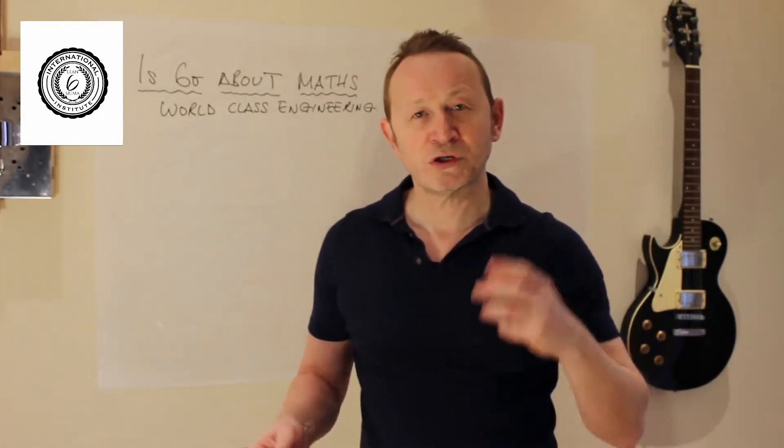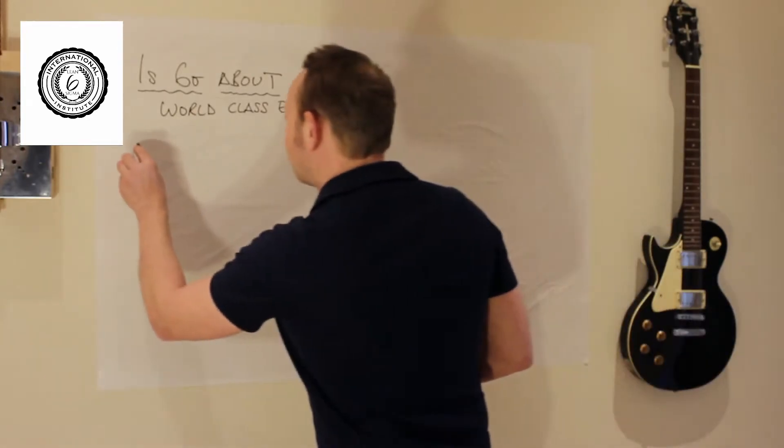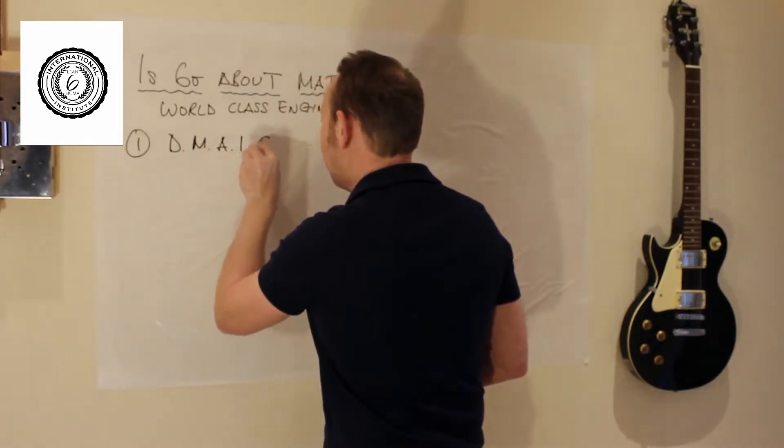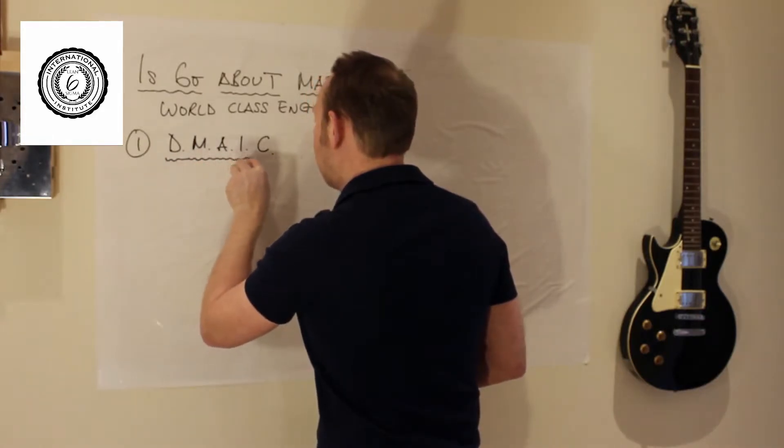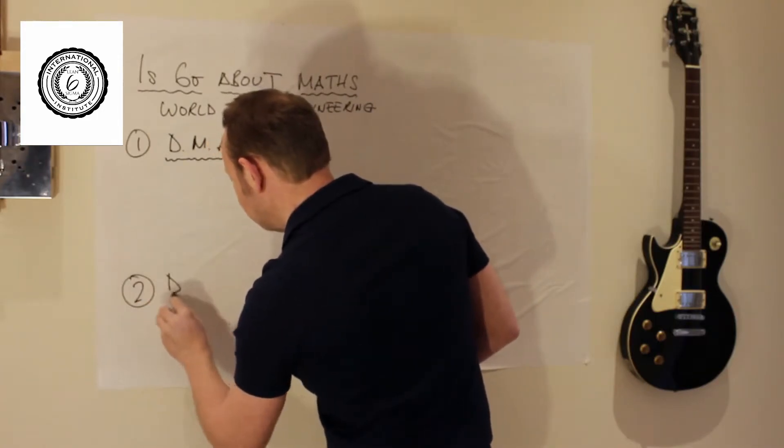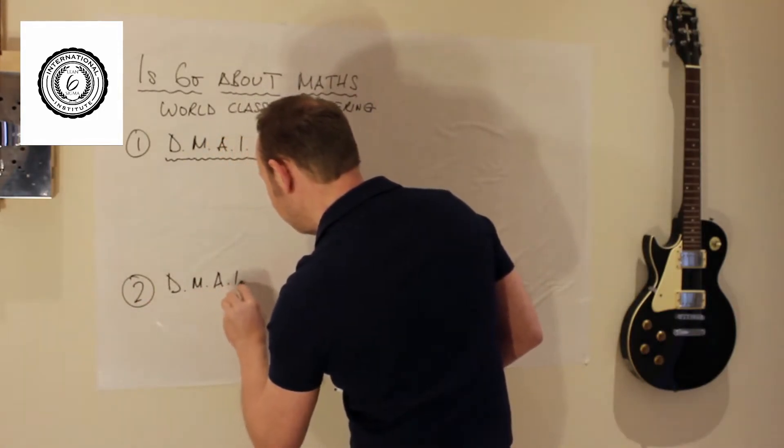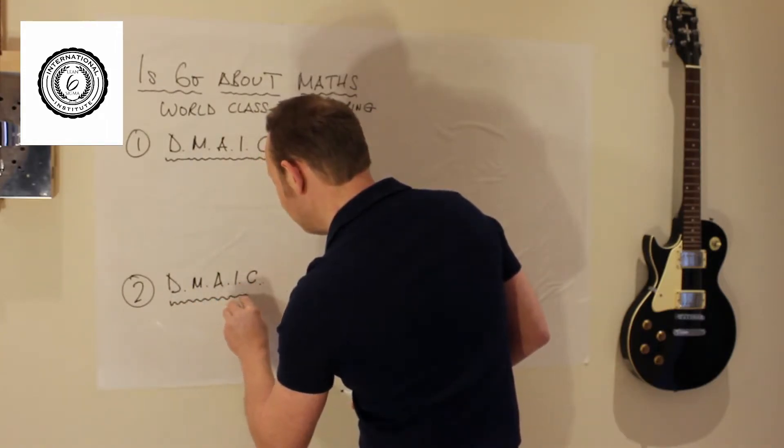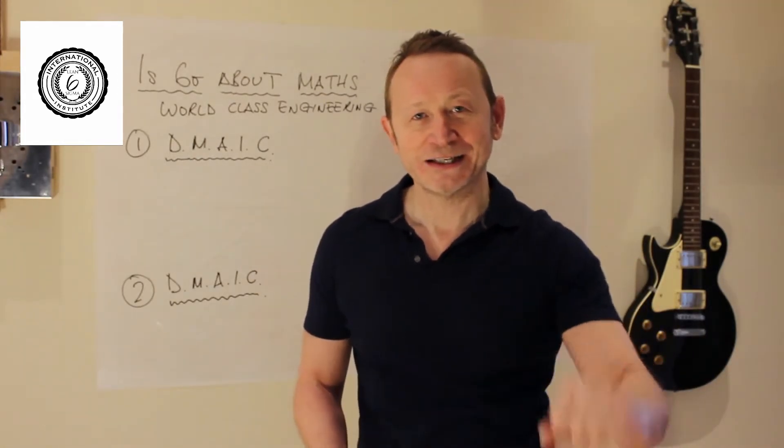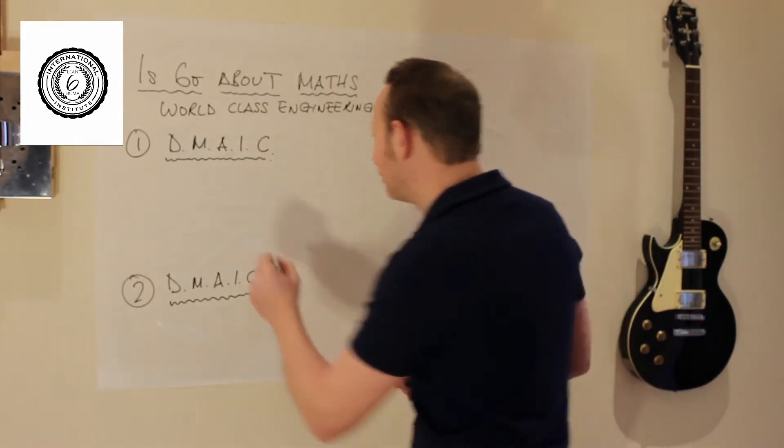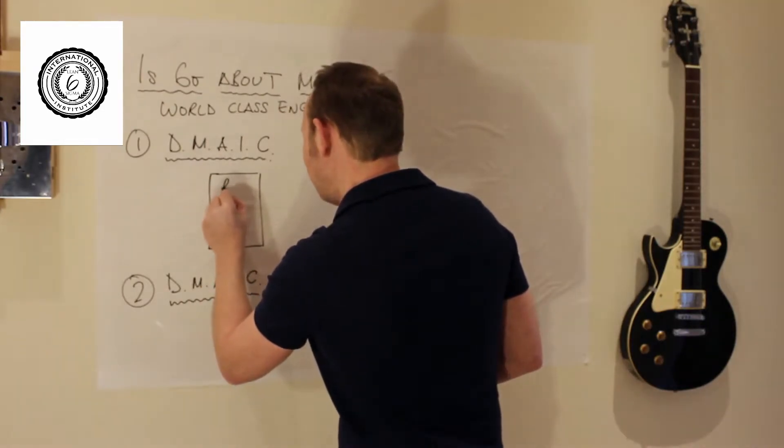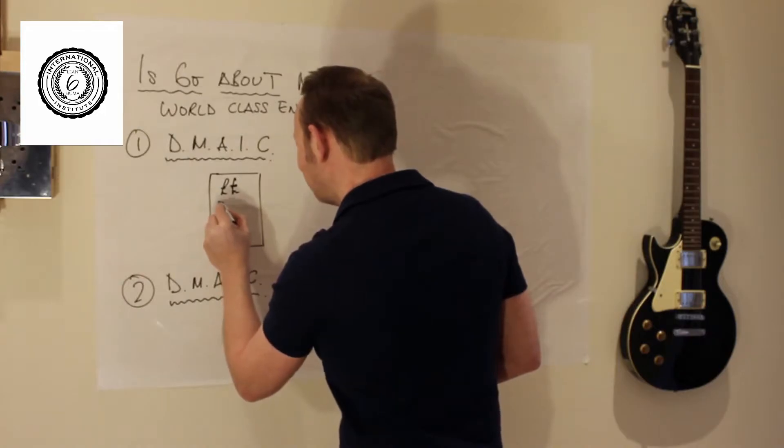We're going to look at two DMAIC cycles. DMAIC cycle one, which is without the maths. And DMAIC cycle two, which is with the maths. Now, the centrepiece of both of these and the centrepiece of Six Sigma, it's not mathematics. The centrepiece of Six Sigma is this thing. It's physics.